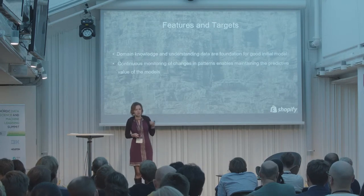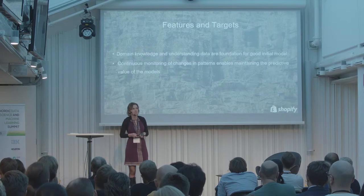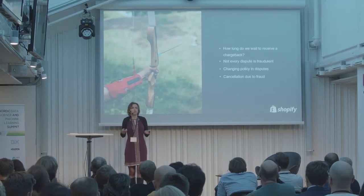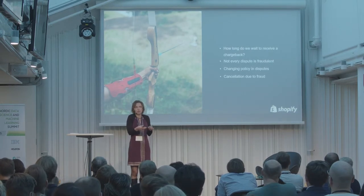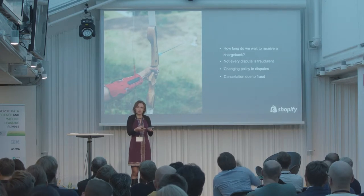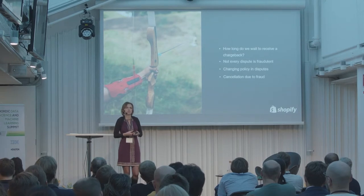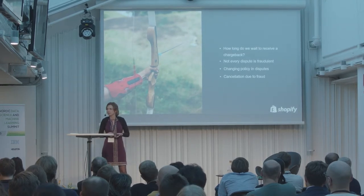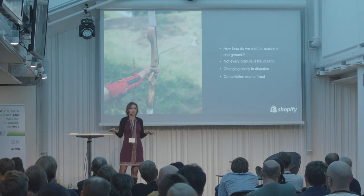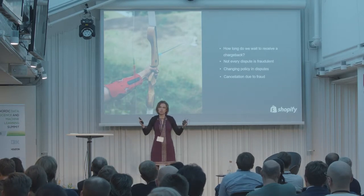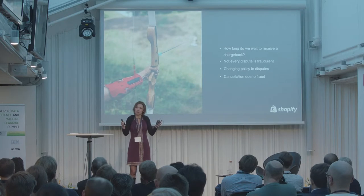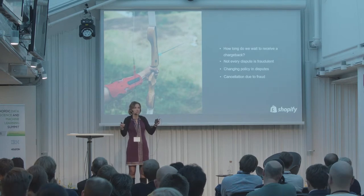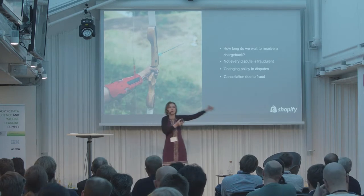I'll talk about targets first, because targets are kind of easier. We want to detect fraud. When an order gets a dispute, it's obvious that something was wrong. But what if it doesn't get a chargeback? Does it mean that it won't get a chargeback tomorrow, the next day, or maybe a month later? For this reason, we need to cut out a period of time where we are just letting data vest — observing whether or not an order will receive a chargeback. That means our training data is truly historical — it's way in the past.